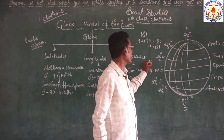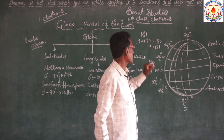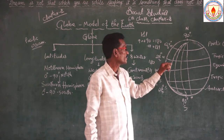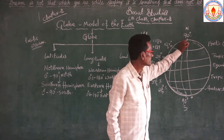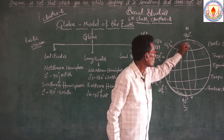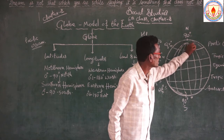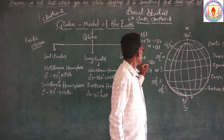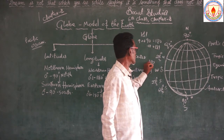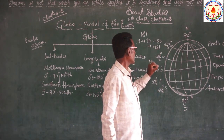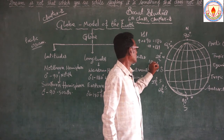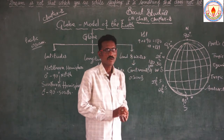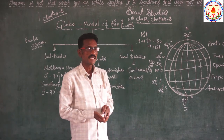On the west side there are 180 longitudes. At the same time, on the east side there are also 180 longitudes. 180 plus 180 equals a total of 360 longitudes.